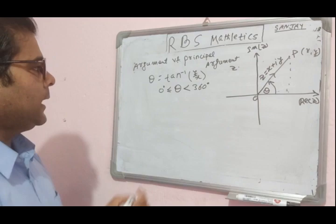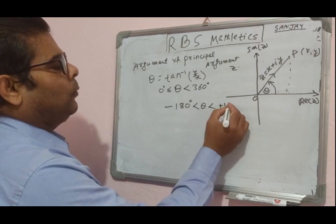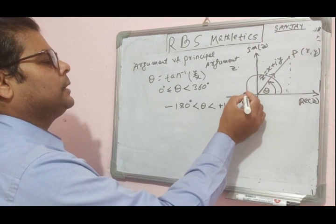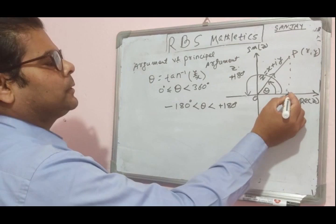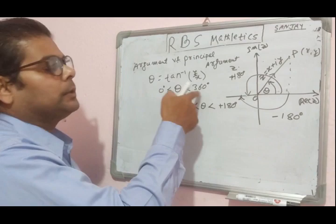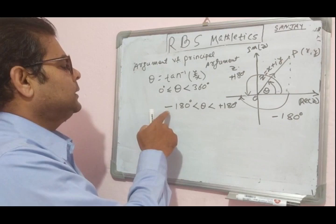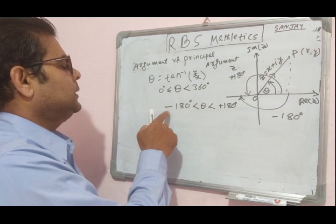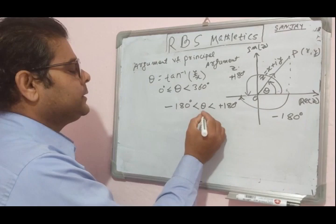However, if instead we consider the range -180° < θ ≤ +180°, this corresponds to measuring 180° in the positive (anti-clockwise) sense and -180° in the negative (clockwise) sense. When θ is expressed in this restricted range of -180° to +180°, it is called the principal argument.